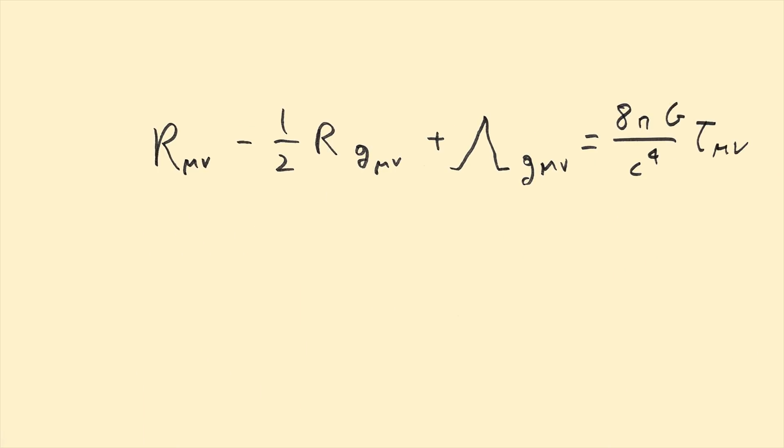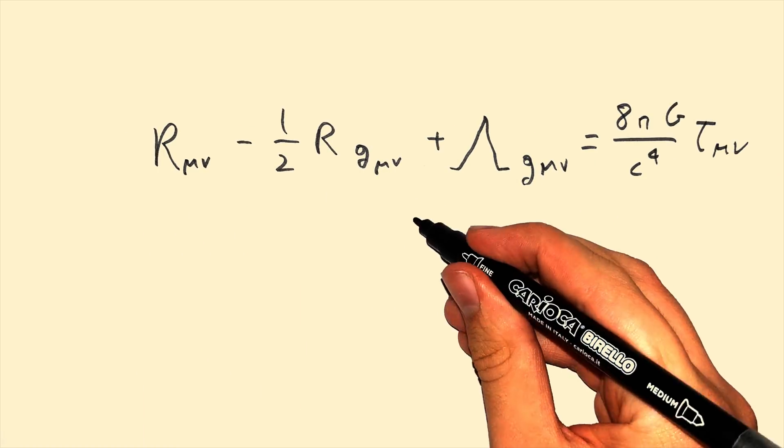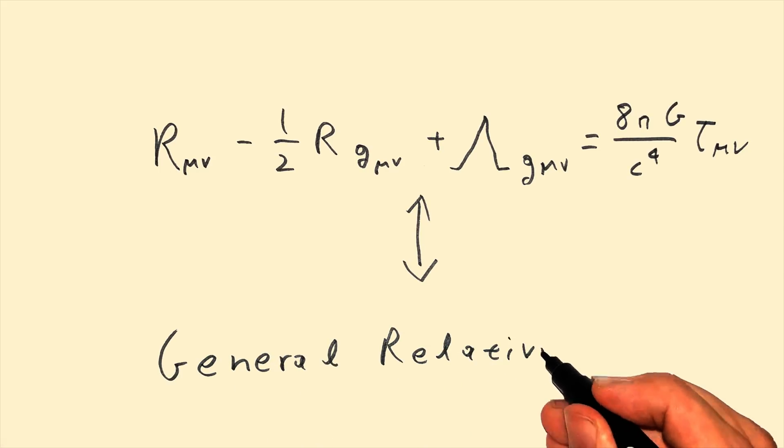These are the Einstein equations. They belong to General Relativity, our current theory of the behavior of macroscopic objects as well as gravity.